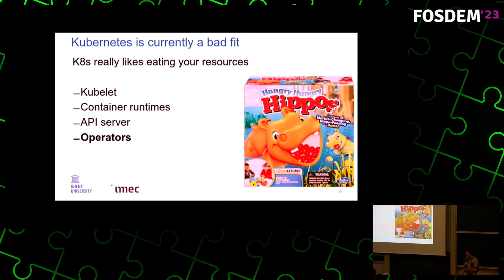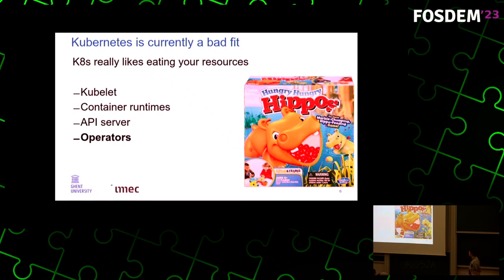Kubernetes is incredibly resource-hungry. It really likes to gobble up RAM and block all your CPUs. There are a lot of components inside of the Kubernetes control plane that do this — part of it is the kubelet that runs on every worker machine, part of it is the container runtimes themselves, or the API server.